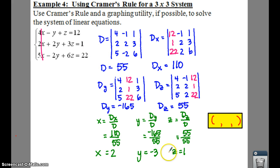So, you have all of your values here. Your ordered triple is 2, negative 3, and 1.